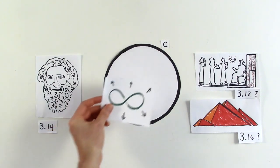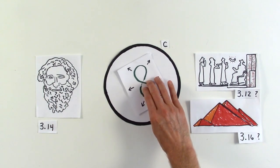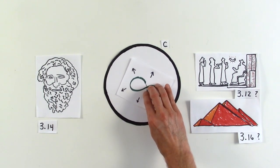They couldn't imagine regular polygons with infinite sides to define a perfect circle for engineering and design.